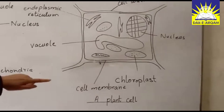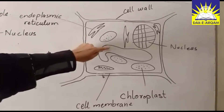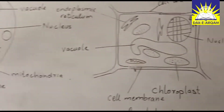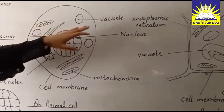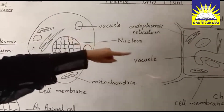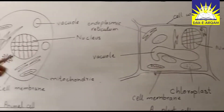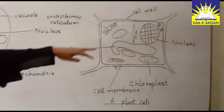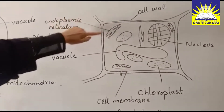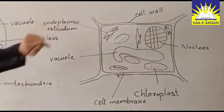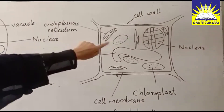If we talk about plant cells, the center of the plant cell has a large vacuole. Animal cells have more than one vacuole — there are multiple vacuoles, but in plant cells only one large vacuole is present and the nucleus is pushed to the side. The outermost covering is the cell wall, and this is the endoplasmic reticulum.